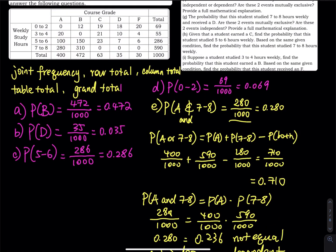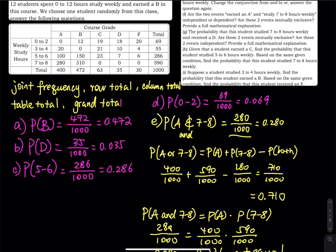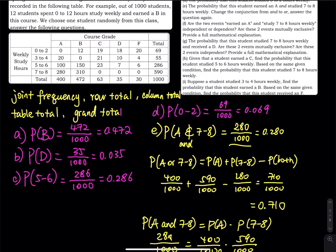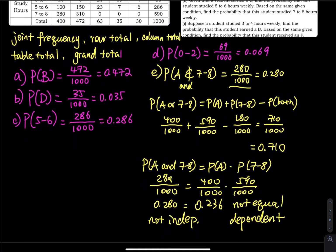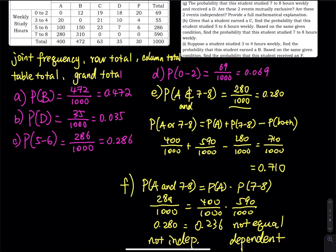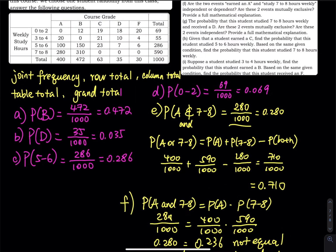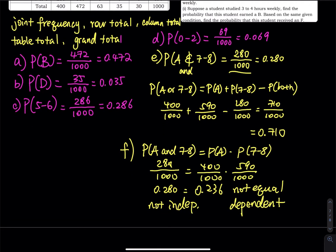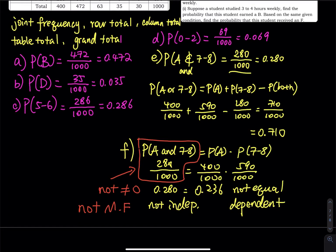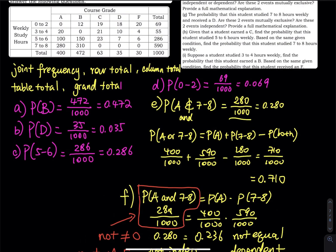Are these events mutually exclusive? Looking at the AND probability: is P(A and 7 to 8) equal to 0? The answer is no — it equals 280/1,000, which is not 0. That means these two events share 280 students in common, so they are not mutually exclusive.